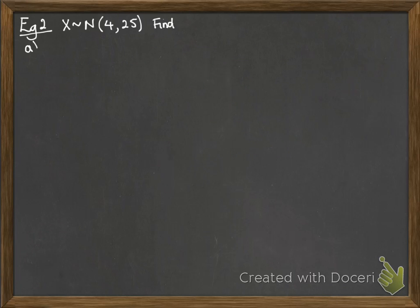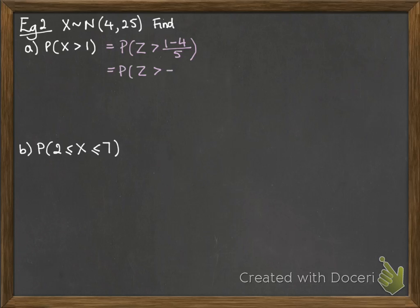We'll do it again. We've got another distribution. x follows a normal distribution with mean of 4 and variance of 25. We want to find the probability that x is greater than 1. So we'll turn that 1 into the equivalent z value by taking away 4 and dividing through by the standard deviation. Remember, standard deviation will be the square root of the variance. So we want to square root that 25. So we take off the 4 and divide by 5.